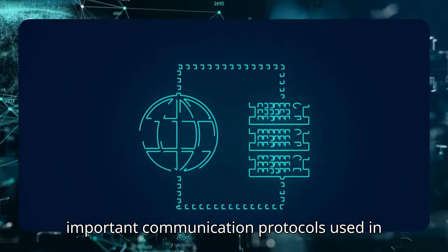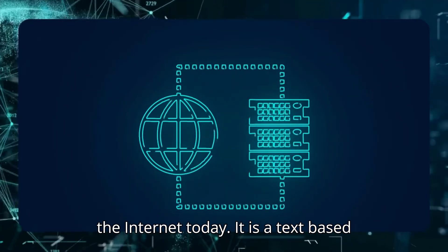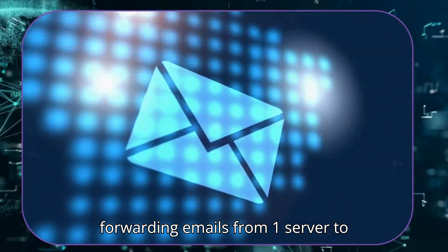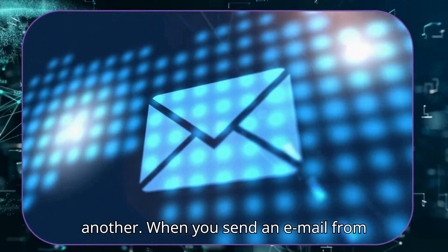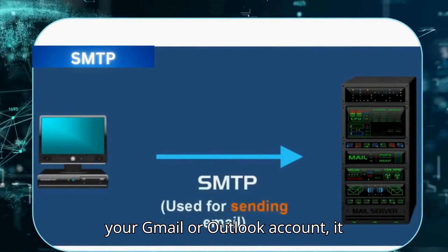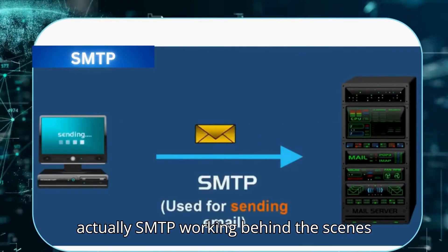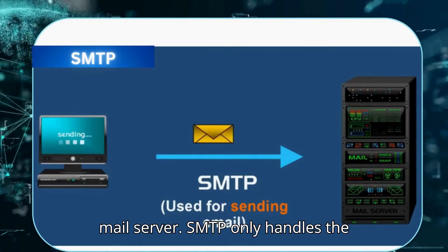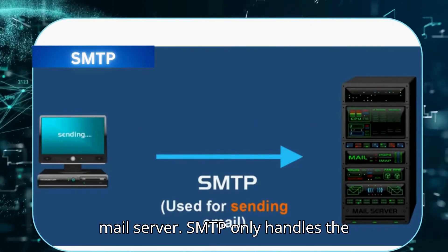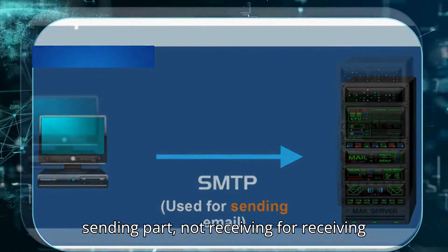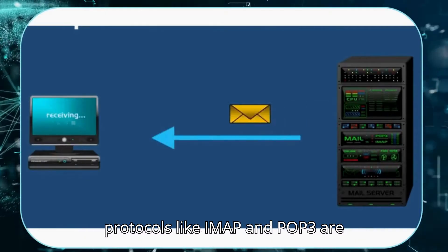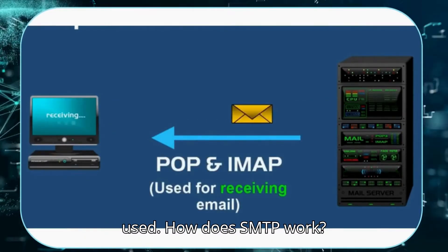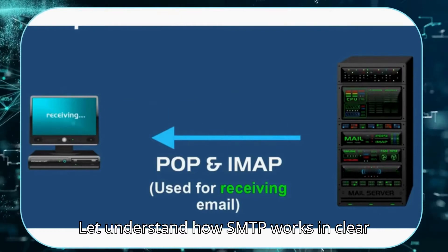Simple Mail Transfer Protocol, or SMTP, is one of the most important communication protocols used on the internet today. It is a text-based protocol that helps in sending and forwarding emails from one server to another. When you send an email from your Gmail or Outlook account, SMTP is working behind the scenes to deliver your message to the receiver's mail server. SMTP only handles the sending part, not receiving.